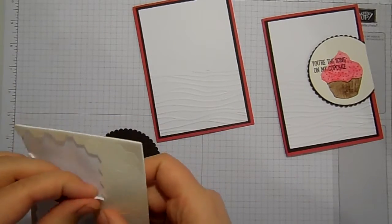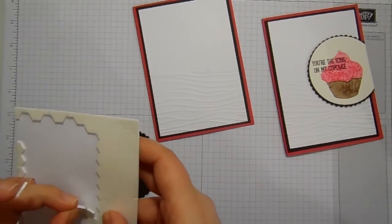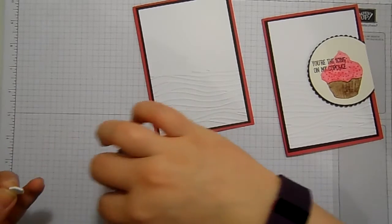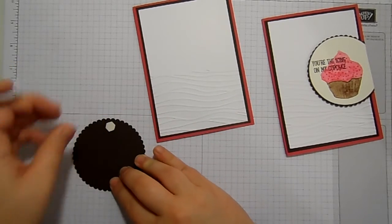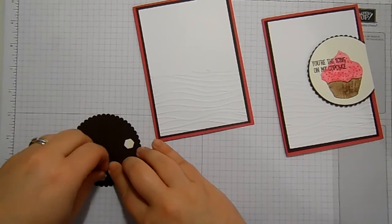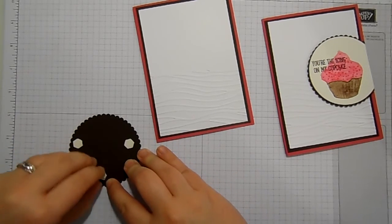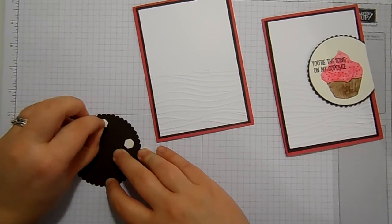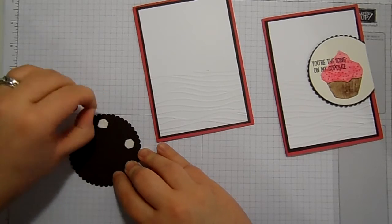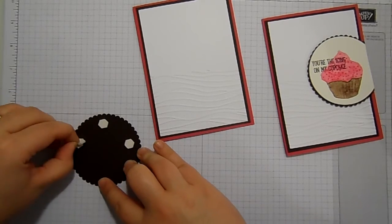So I'll add some dimensionals onto the back of this circle and let's just get it the right way around. I'm going to add them like that. No, that's the wrong way around. I'll take that one back off again. But you do have a little bit of time with dimensionals. You don't push them down too hard.